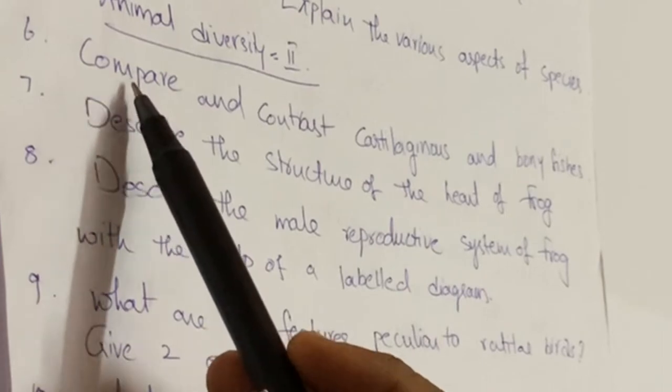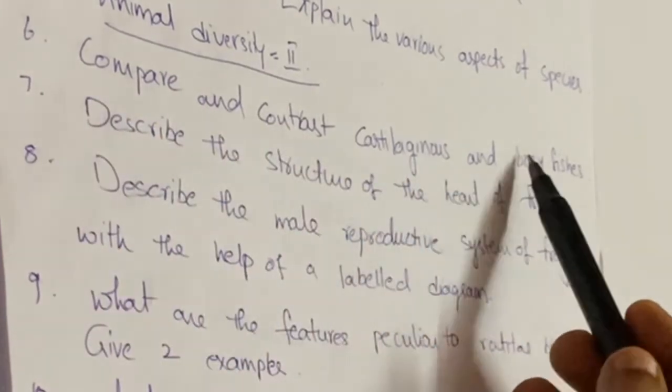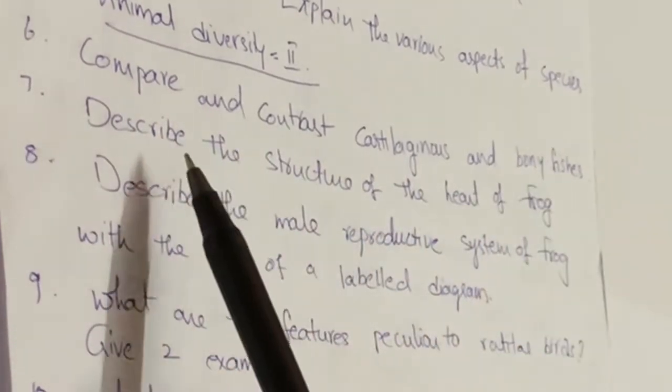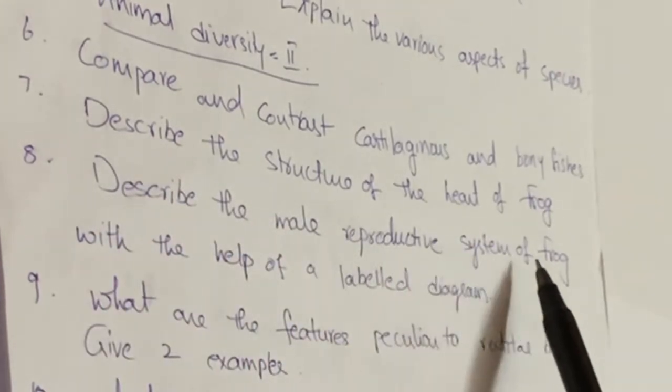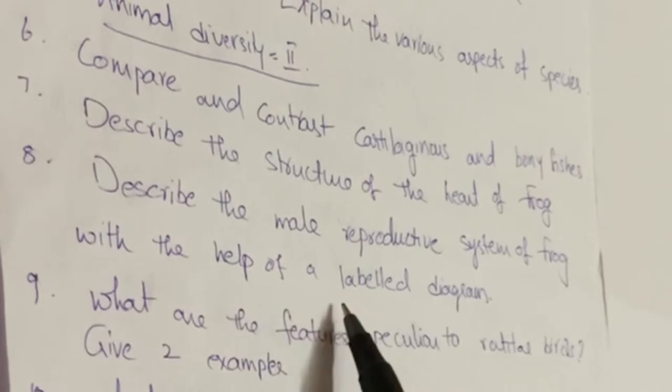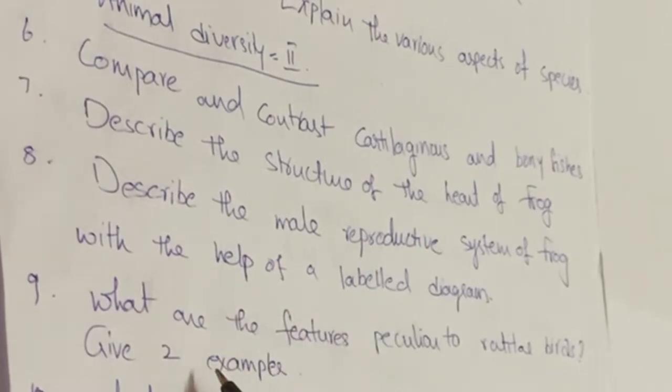From Animal Diversity, two important questions are: compare and contrast cartilaginous and bony fishes, and describe the structure of the heart of frog. Describe the mode of reproduction system of frog with a neat labeled diagram.